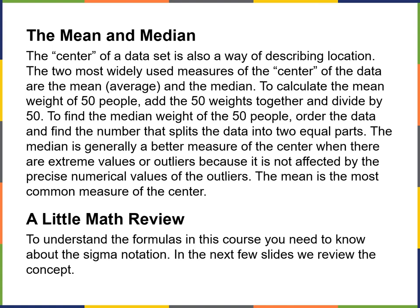The median, however, is generally a better measure of the center when there are extreme values or outliers, because it is not affected by the precise numerical values of the outliers. For example, if you have 50 men that are about five foot eight and around 180 pounds, your average weight will be around 180 pounds.